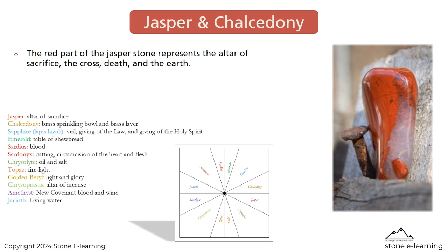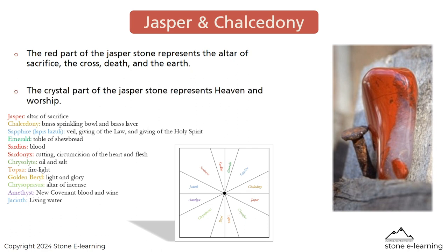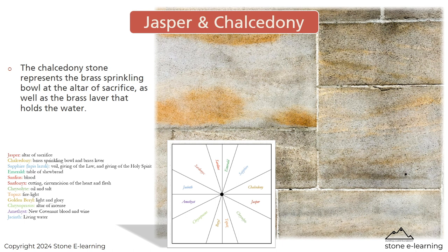The red part of the Jasper Stone represents the altar of sacrifice, the cross, death, and the earth. The crystal part of the Jasper Stone represents heaven and worship. The Chalcedony Stone represents the brass sprinkling bowl at the altar of sacrifice, as well as the brass laver that holds the water.